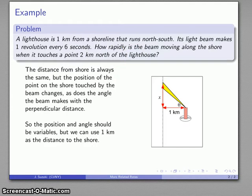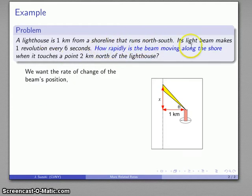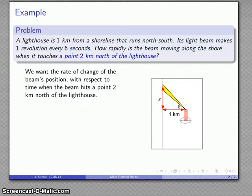Now, what do we actually want to know? We're interested in knowing how rapidly the beam is moving along the shore. That's a rate of change of the beam's position with respect to time because our time is tied in with a changing amount. The light beam makes one revolution every six seconds. So our rate of change is going to be with respect to time, and the point of interest is when we have touched a point two kilometers north of the lighthouse.